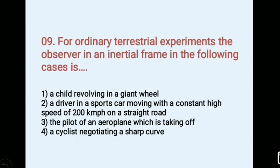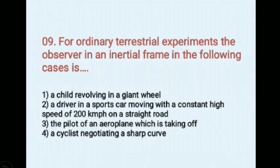For ordinary terrestrial experiments, the observer in an inertial frame in the following cases is. Options: 1) a child revolving in a giant wheel, 2) a driver in a sports car moving with a constant high speed of 200 km per hour on a straight road, 3) the pilot of an aeroplane which is taking off, 4) a driver in a sports car moving with a constant high speed of 200 km per hour on a straight road.